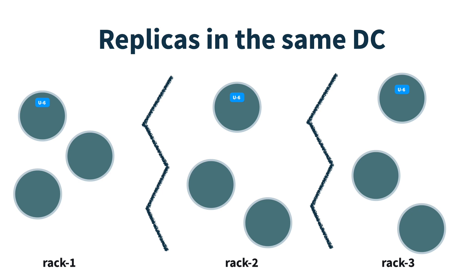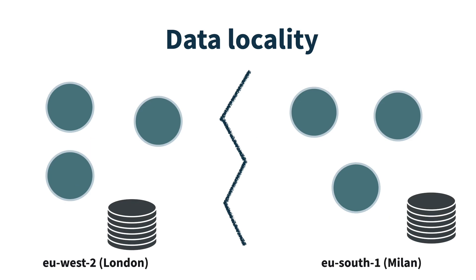Another advantage of this configuration is for rolling redeployments. You can guarantee that if you do rolling redeploys one rack at a time, you've always got a replica for every single entity in your system.